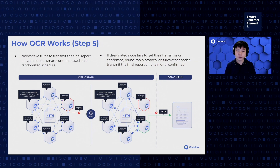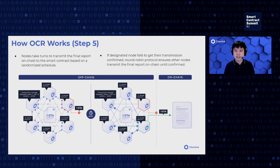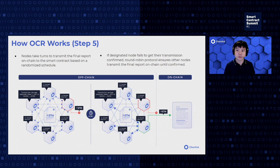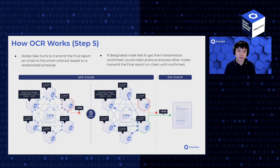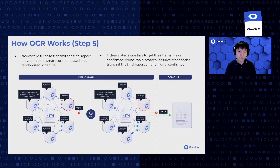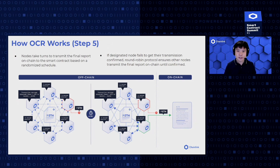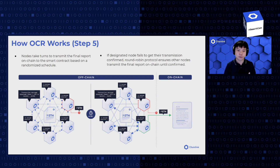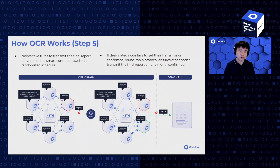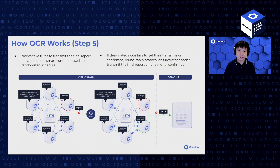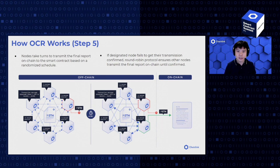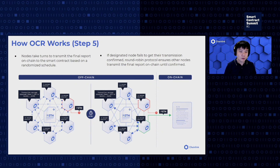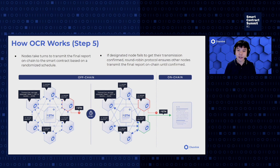In the transmission phase, nodes take turns to transmit the final report on-chain. This starts with one node transmitting that report transaction. If this designated node gets the transaction on-chain, they get the reward. If a node tries to withhold the report or fails to get the transmission confirmed, then after a certain number of blocks or time, the next node in line will transmit, and so on. An increasing number of nodes will transmit until the report is confirmed. This ensures there is no single point of failure, yet we only need one report with sufficient signatures to be submitted, allowing us to scale delivery of reports on-chain very reliably and efficiently.